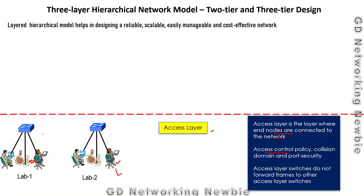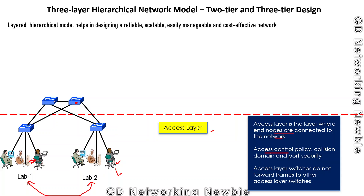Now if we want to connect these computers or these labs — which are in two different labs, lab one and lab two — we can purchase a new switch, and the access layer switches can be connected with that switch. For redundancy, we can purchase another switch and connect both access layer switches with this second distribution layer switch. So if any switch on the distribution layer fails, the network will still be working because we have provided redundancy — a duplicate copy has been implemented. We call these switches, which provide an aggregation point for the access layer switches, to work on the distribution layer.